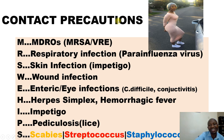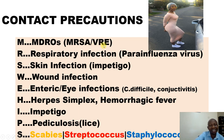For contact precautions, we use the mnemonic 'Mrs. We Hips.' Each letter stands for specific diseases, including multi-drug resistant organisms such as Methicillin-Resistant Staphylococcus Aureus (MRSA) and Vancomycin-Resistant Enterococci (VRE). These are the diseases that each letter stands for.